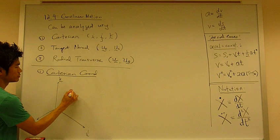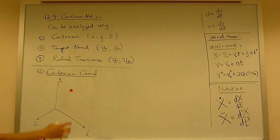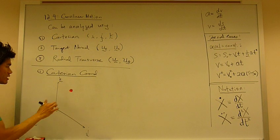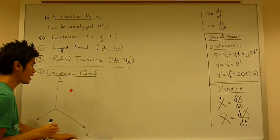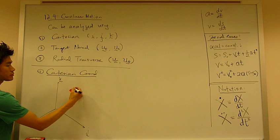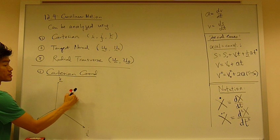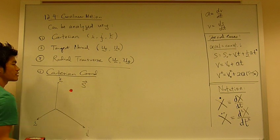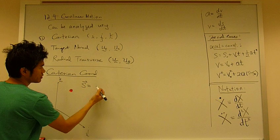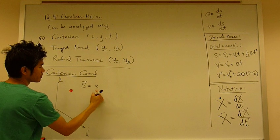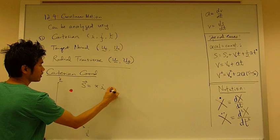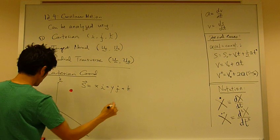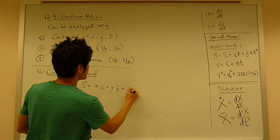And we have a particle traveling along a curved path. And at any given instant in time, we can describe the position of the particle as x vector, as a position vector, equals the x-coordinate i, plus the y-coordinate j, plus the z-coordinate k.